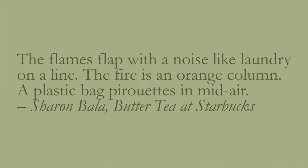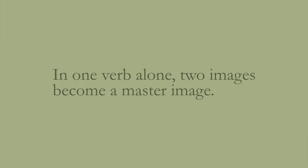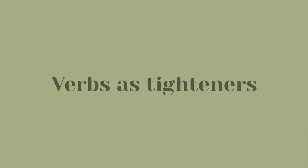An example comes from a short story called 'Butter Tea at Starbucks' by Sharon Bayla. In the opening paragraph: 'The flames flap with a noise like laundry on a line. The fire is an orange column. A plastic bag pirouettes in midair.' Bayla utilizes the very imagistic verb 'pirouettes' — there is a specific image related to the word pirouette. A reader may meld the verb's associated image — dancing — with the working image — the plastic bag flapping in the air — but in one verb alone, two images become a master image.